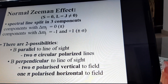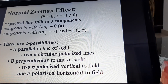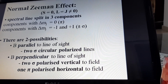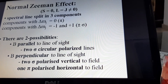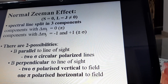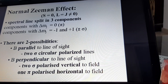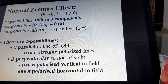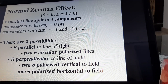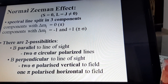The components with ΔM = 0 are called pi lines, and components with ΔM = -1 and +1 are called sigma lines. There are two possibilities: first, when the magnetic field is parallel to the line of sight, two sigma circularly polarized lines are obtained; and second, when the magnetic field is perpendicular to the line of sight, two sigma vertically polarized lines and one pi horizontally polarized line are obtained.